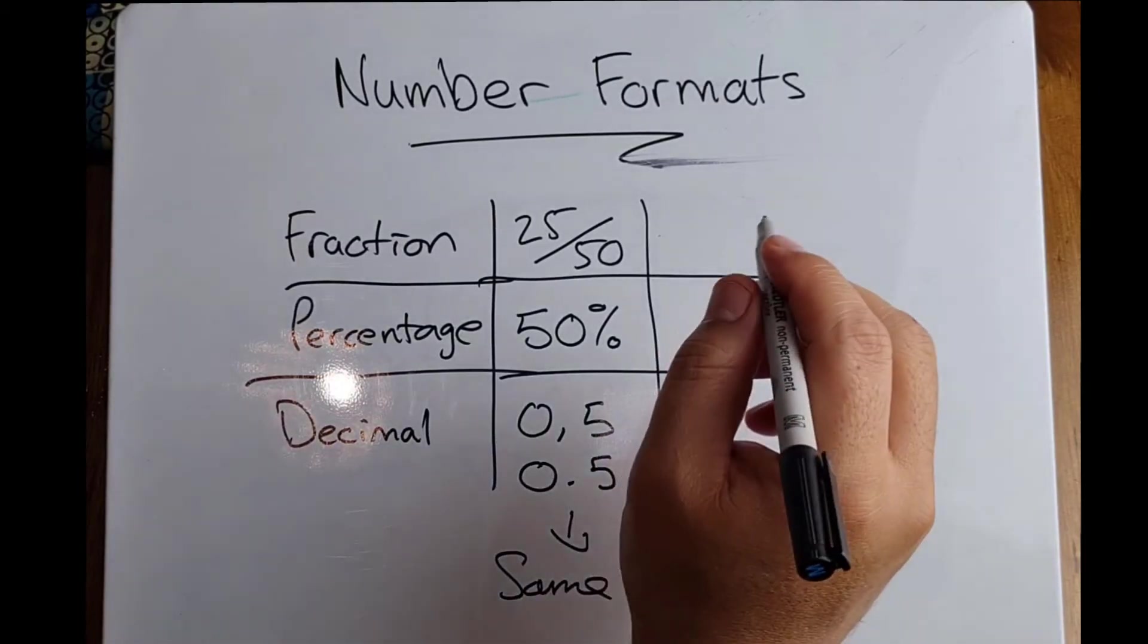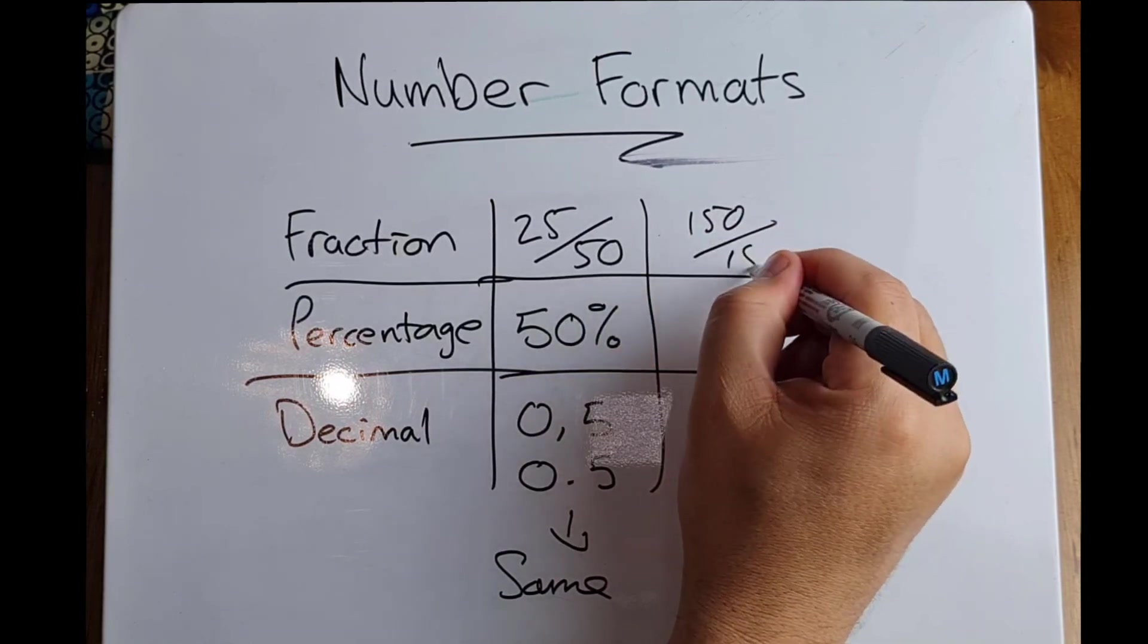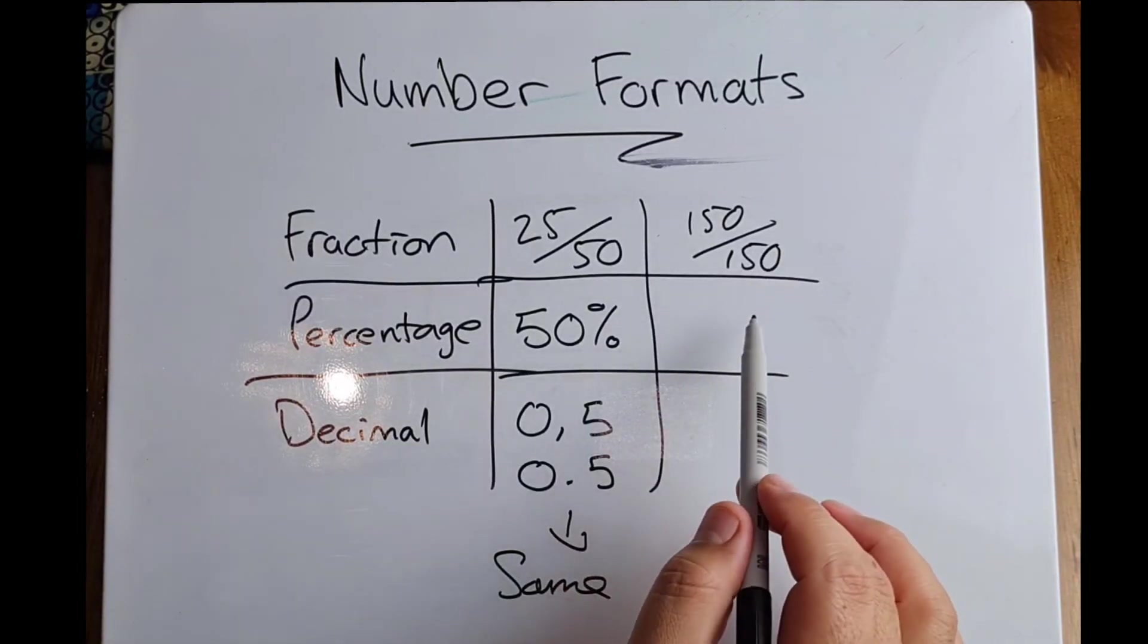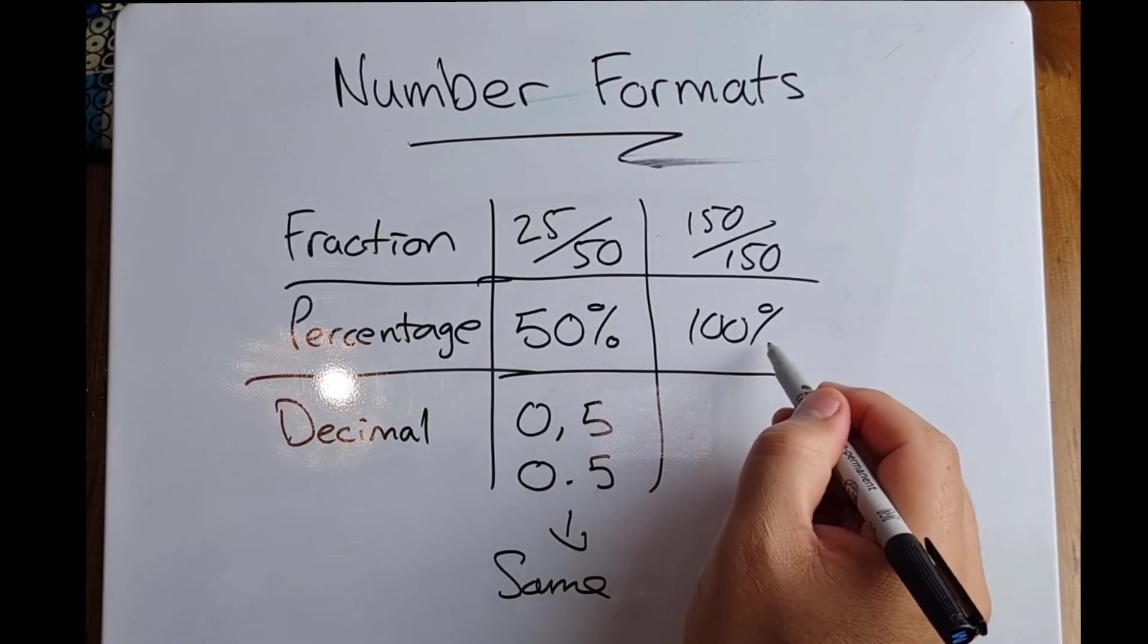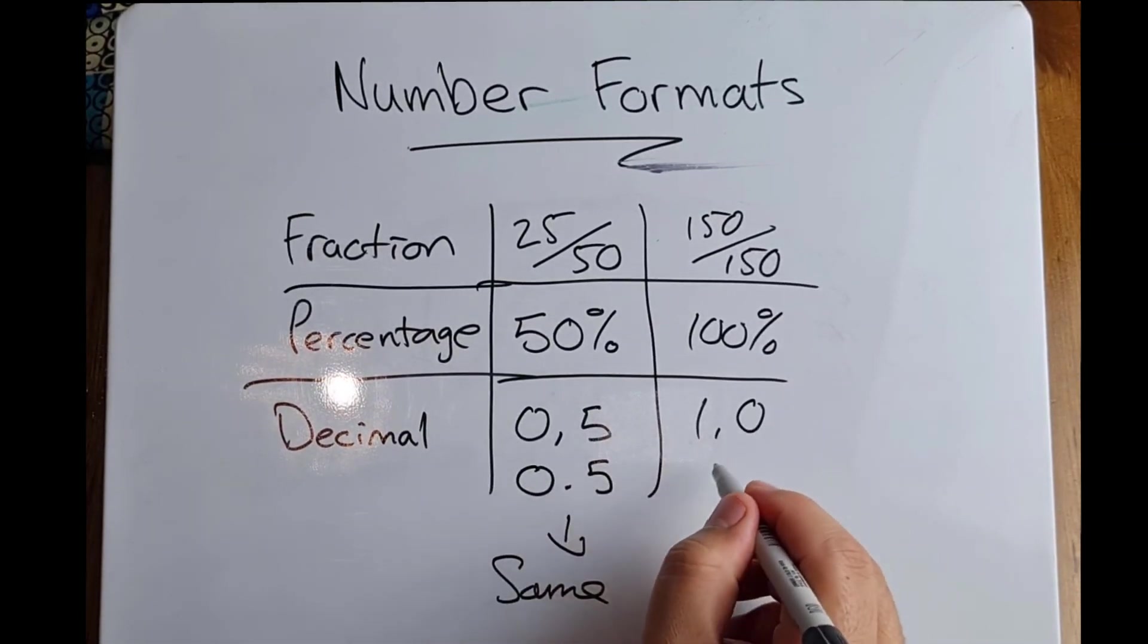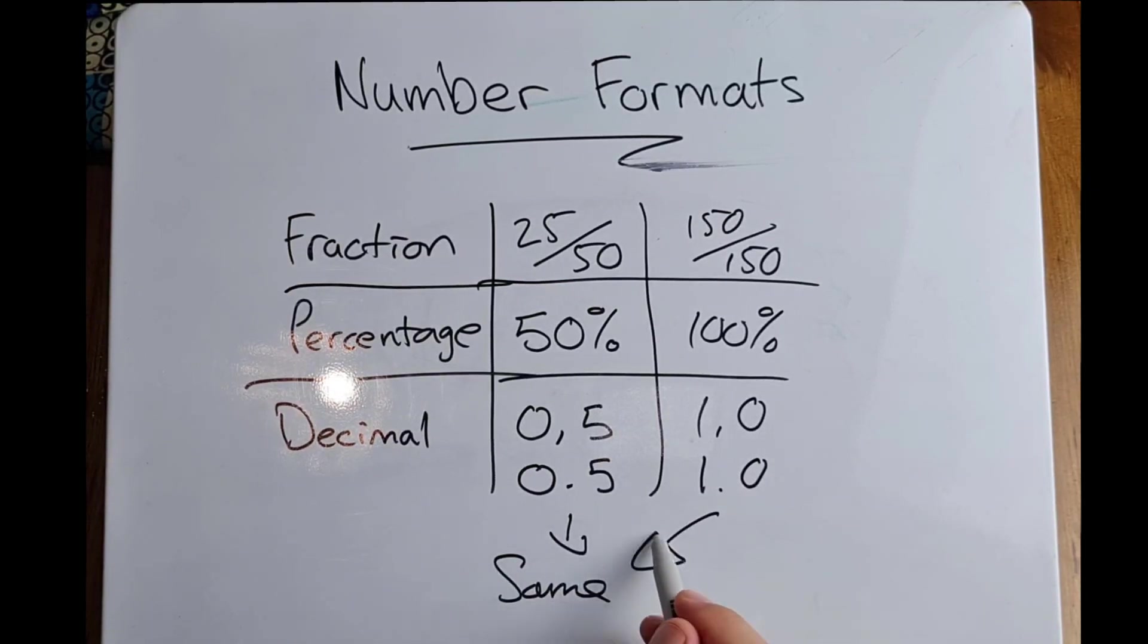Let's look at one more example. 150 out of 150. If you got that for a test, that would be full marks. What is that in percentage? That means it's 100%. And as a decimal, that would be 1.0. But again, these are all indicating the exact same number, just expressed in a different format. Thank you.